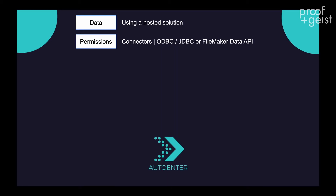One method that FileMaker provides is the web data connector for use with Tableau, and another method is using a new connector that Tableau came out with. We built something called a FileMaker JDBC Taco — Tableau has this Taco connector SDK — and it gives you additional benefits like faster performance and the ability to pull in more than one table at a time.